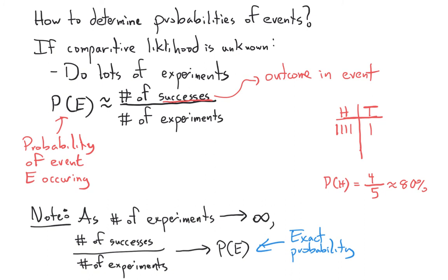There's this result called the law of large numbers. And it says that, as the number of experiments goes to infinity, as you do more and more experiments, this proportion of the number of successes over the number of experiments, this approaches the actual true probability of this event, e, occurring. So, if we want to get a more accurate estimate of our probability, we just have to run the experiment loads more times.